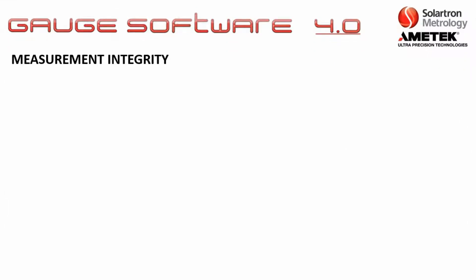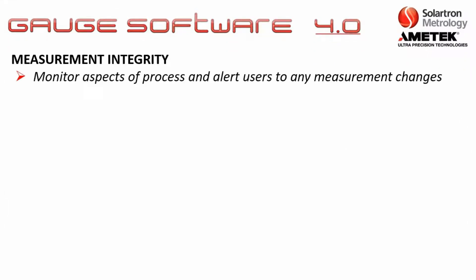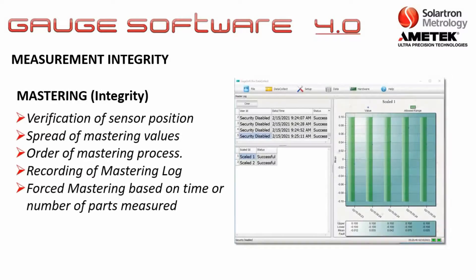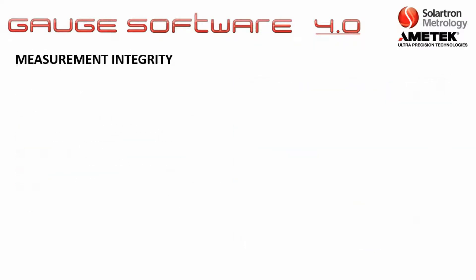There are also multiple features for measurement integrity, which is basically the monitoring of aspects of the measurement process and will alert users of any measurement changes. One example is mastering integrity, which includes verification of sensor position, the spread of mastering values, the order of the mastering process, recording of the mastering log, and forced mastering based on time or the number of parts measured.